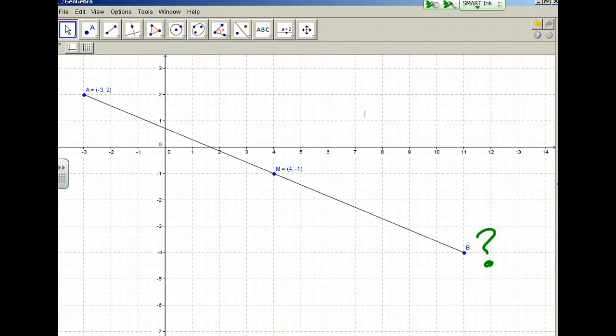From the way I drew it on GeoGebra, you can kind of see that it's going to be at (11, -4), but we're not going to use graphing methods to solve this. I want to show you how you can solve this problem algebraically.